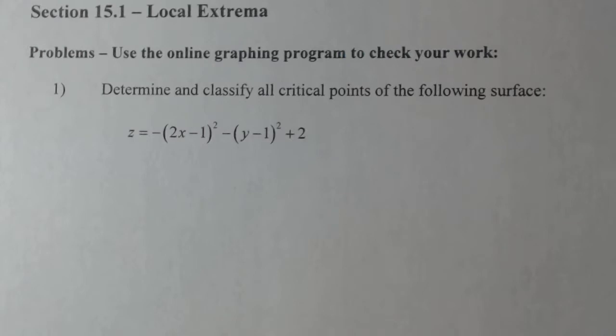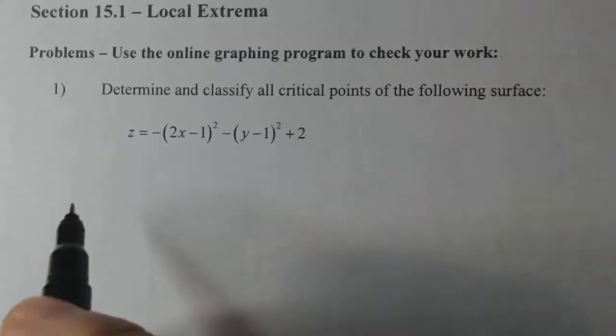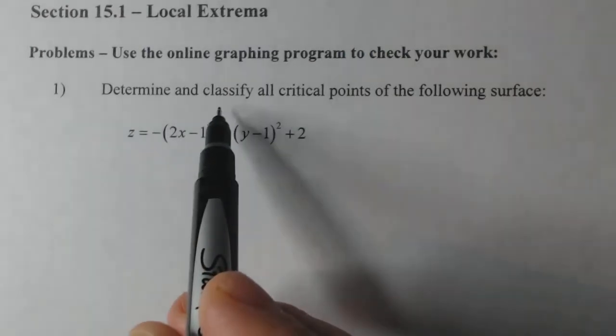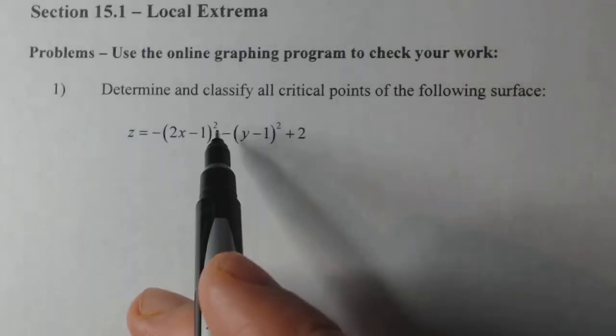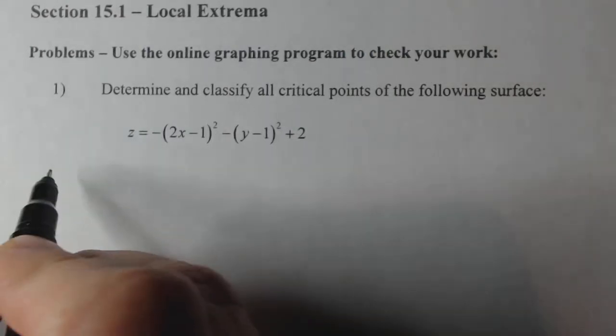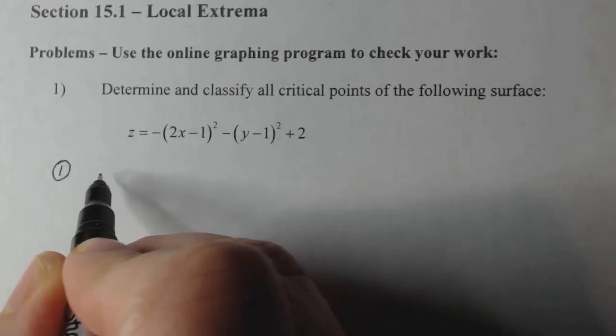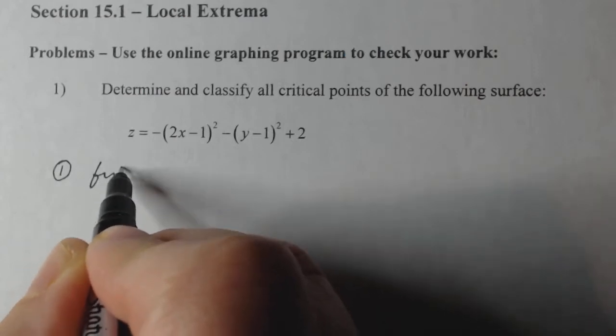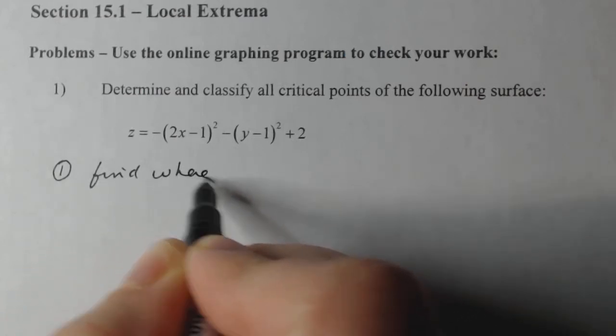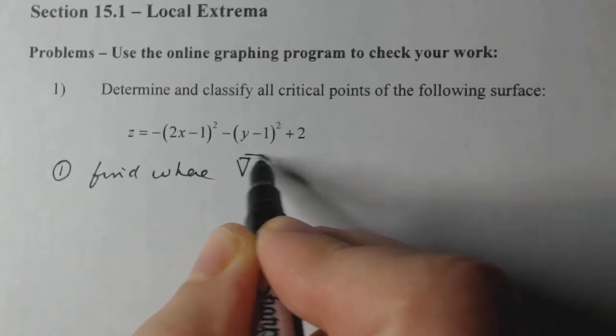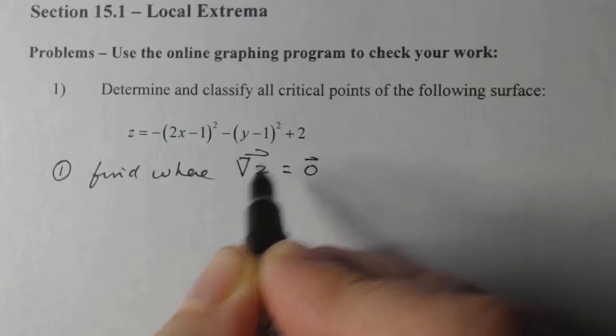So if I have to find the critical points and classify them, that means I'm going to classify them as local max or local mins. The first thing I'm going to do, step one, is to find where the gradient of z in this case is equal to the zero vector.